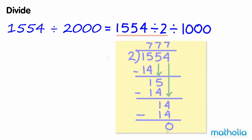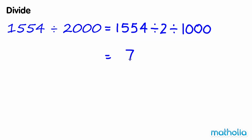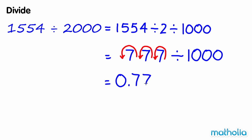Now we need to divide by 1000. We can do this by shifting the decimal point three places to the left. 1554 divide 2000 equals 0.777.